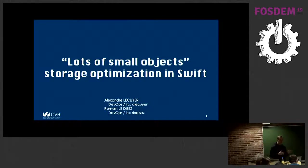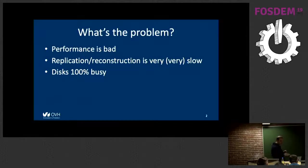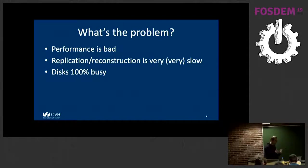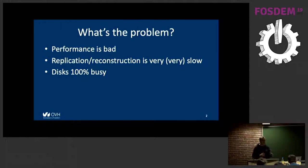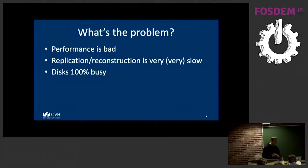If we are talking about optimization, it means we had some issues. First, the most obvious: we had performance issues. Especially on latency — when a user requested an object, getting it in 30 milliseconds is okay, but hundreds of milliseconds or even seconds is not good. We also had issues with replication and reconstruction in Swift — replacing a failing hard drive and rebuilding data was very, very slow. And our disks were always 100% busy, which is the root cause of the two points above.